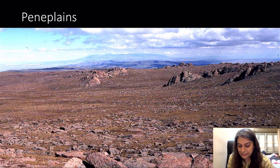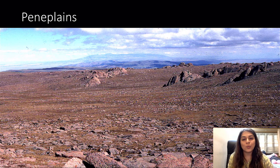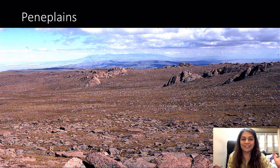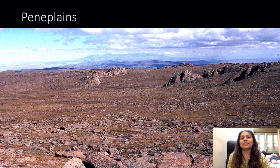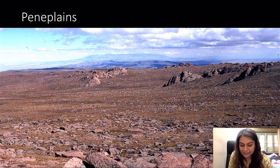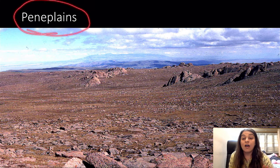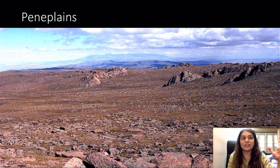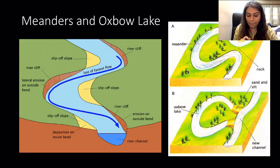A peneplain is a feature where the river has finished all its erosion. A mountain range might have been there, but now what is remaining is just a plane with some residual rocks. It is the final erosional stage after which this kind of feature is formed.